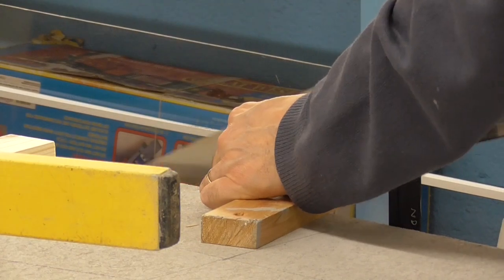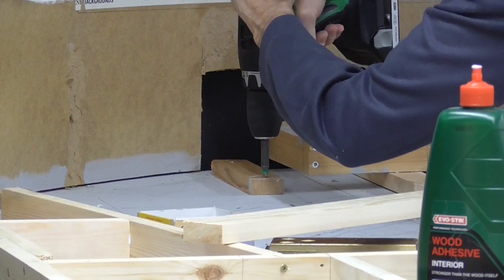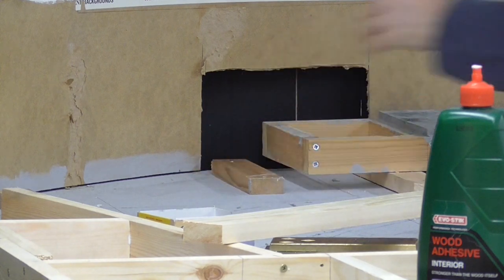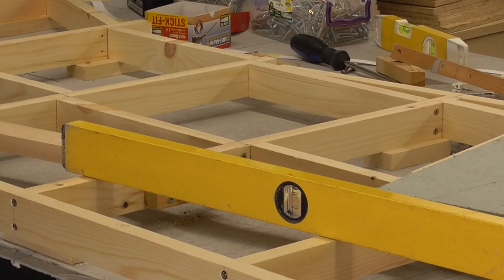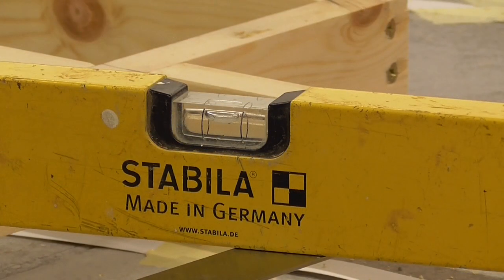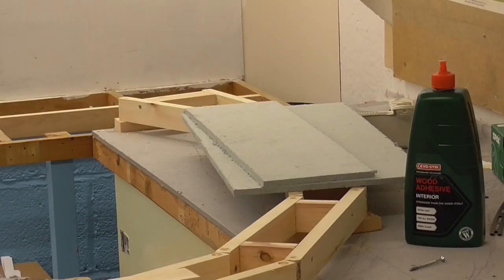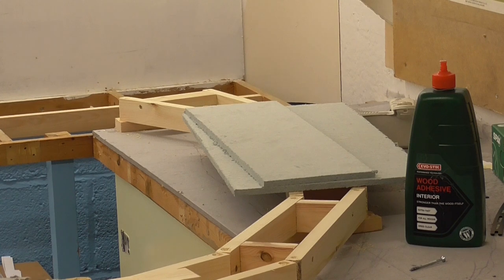Timber battens are cut to size and screwed together to form the framework. Special care is taken to ensure all the frames are in position and level before sections of Sundila board are attached on top.